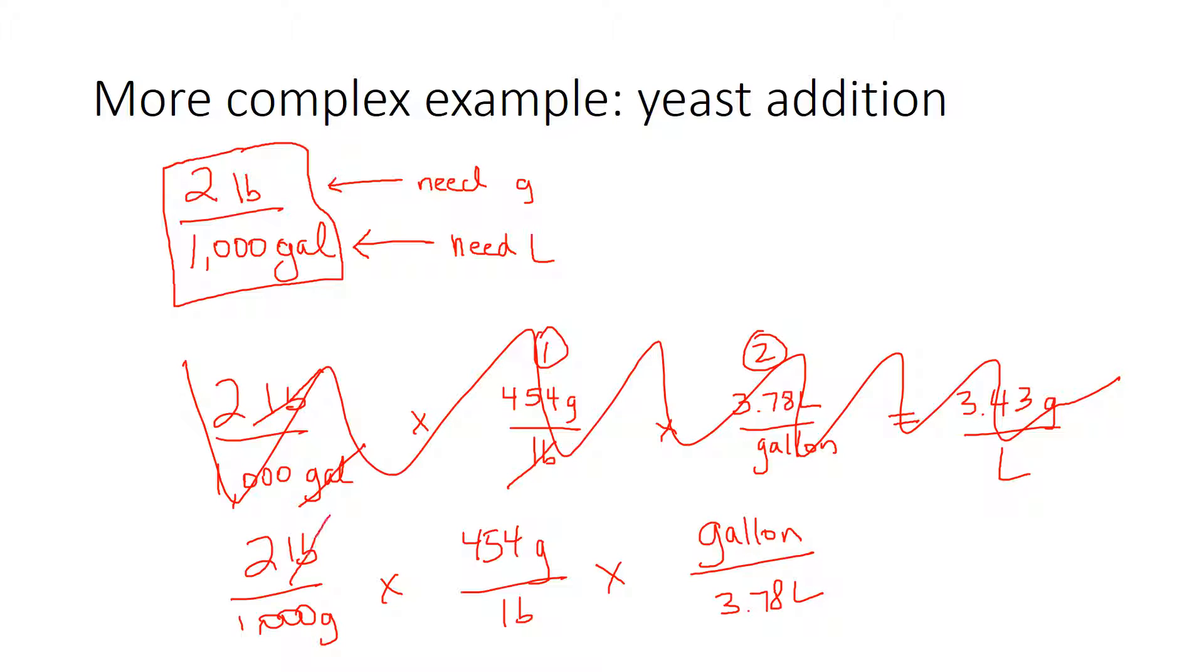Well, pounds in the numerator there canceled with pounds in the denominator. Gallons here in the denominator canceled with gallons in the numerator. And now what am I left with? I'm left with grams per liter. And that's exactly what I'm looking for, right? I'm looking for grams per liter.